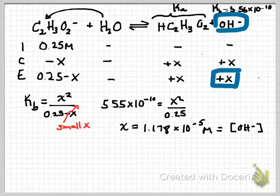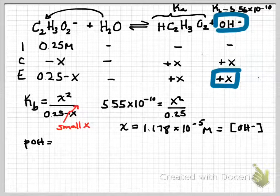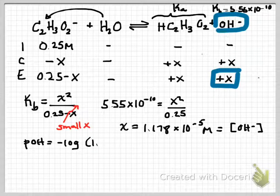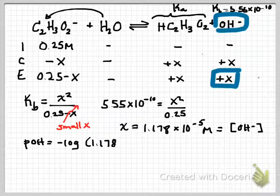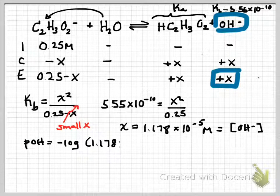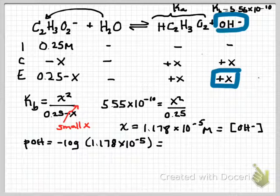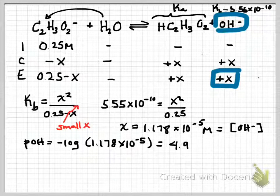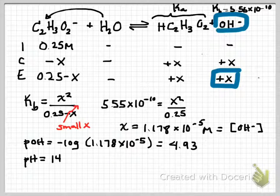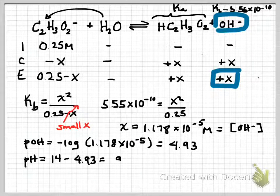So we can get our pH simply by doing our POH first. So our POH is 4.93. Therefore, our pH is equal to 14 minus 4.93, and that gives us 9.07.